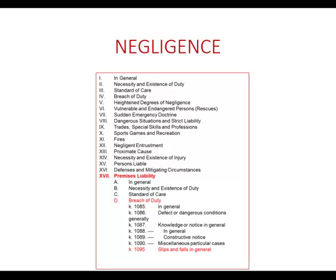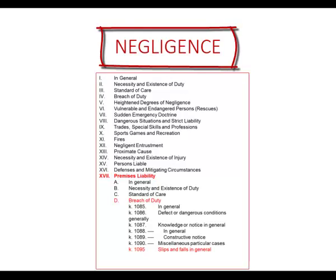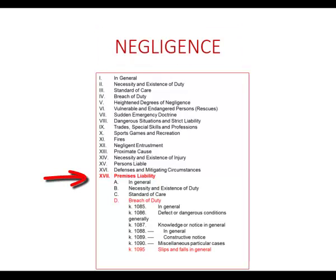A practitioner with experience in using the topic and key number system will know, basically, what cases are covered and in which topics. So a seasoned practitioner might approach the problem using top-down analysis — knowing they're interested in cases involving negligence and the liability for an accident on their client's premises, and that the accident involved a slip and fall. Using that approach, they'd start with the digest topic negligence and work down: negligence, premises liability, breach of duty, slip and fall. Now that I know what the relevant key number is, I'll go look up cases there.